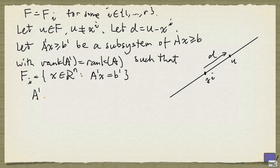So A'D is 0, and since D is not identically 0, D is a non-zero vector in the null space of A'. And because of this, and that A' is a submatrix of A, we must also have AD equals 0. In other words, D is a member of C.